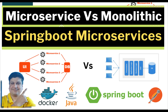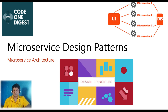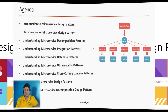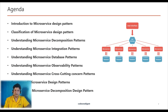Just to recall: monolithic architecture is a singular large computing process with one code base that couples all of the business logic into one entity, and microservice architecture consists of a collection of small autonomous services. For more information, go and watch the previous video.